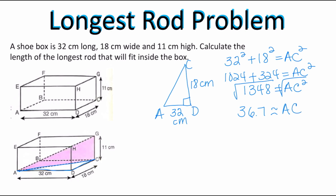Keep that value in your calculator and we'll use that exact number in our next calculation. What we've discovered is that the length from A to C is approximately 36.7 centimeters. Now I'll use that diagonal and anchor a right triangle formed by the longest diagonal in the box — connecting the bottom front corner to the back top corner — using side GC as my right angle. So AC is 36.7 and GC is 11 centimeters.